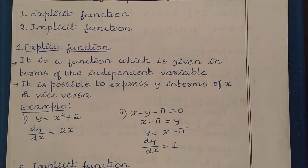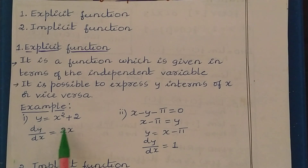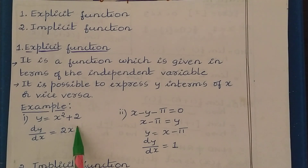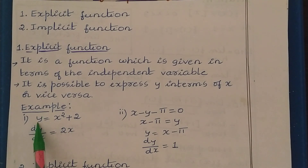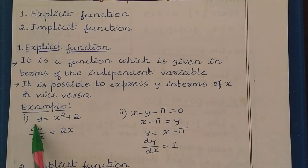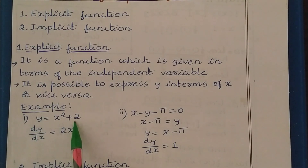For example, here we have y is equal to x squared plus 2. On the left hand side we have the variable y, and on the right hand side we have the variable x. This y depends on x — as the x value changes, the y value also changes. So y is the dependent variable and x is the independent variable.